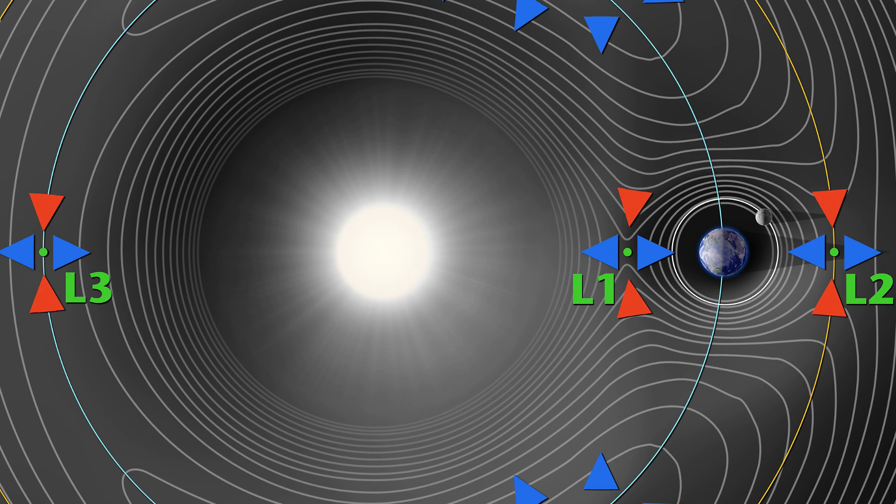So in the case of the sun and the earth, the Lagrange points are about 1.5 million kilometers away from the earth. But also this diagram, while it does show the sun and the earth, you can equally do this for the earth and the moon. And we will use that for the ballistic capture.